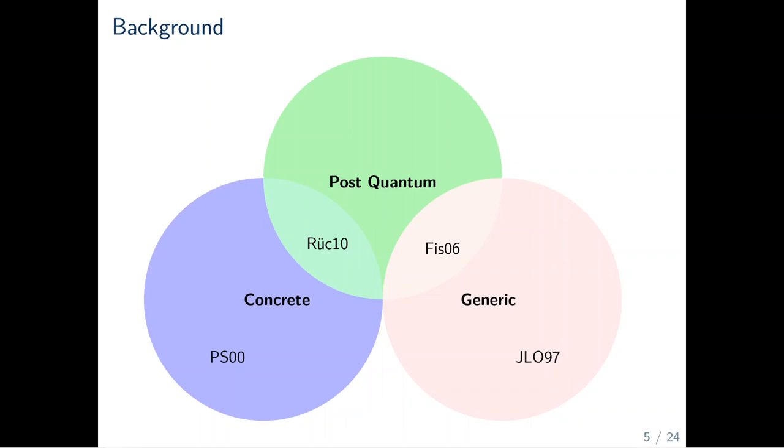In the generic, non-post-quantum setting, we have Juels, Luby and Ostrovsky, Crypto 97. In their construction, they use one-way trapdoor permutations. It is not clear how to instantiate them from a post-quantumly secure assumption.